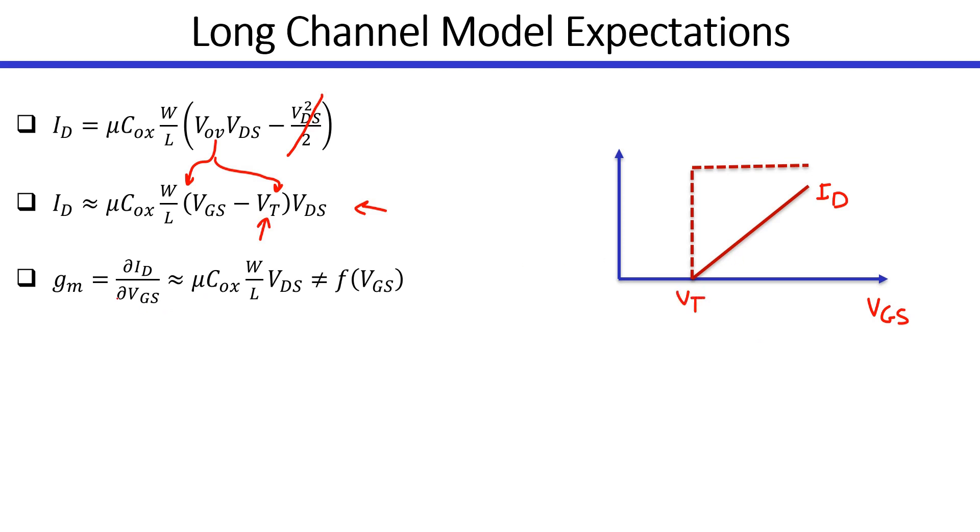The derivative of the drain current is the transconductance, GM. So since this is a straight line, the slope is constant. So GM should be constant. It should be independent of VGS. Of course, this is our simplified long channel model. So let's go to ADT and see the actual device characteristics.